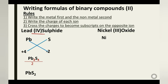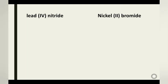Let's try nickel(III) oxide. The metal is nickel (Ni), followed by oxygen (O), which has a charge of −2. The charge of nickel is taken from the Roman numeral III, which is +3. Crossing the charges gives Ni₂O₃.